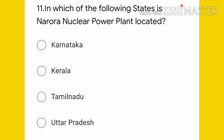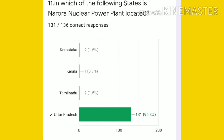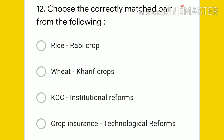Eleventh question: in which of the following states is the Narora nuclear power plant located — Karnataka, Kerala, Tamil Nadu, or Uttar Pradesh? The answer is Uttar Pradesh. Narora nuclear power plant is located in Uttar Pradesh, and 131 students gave the right answer — 96.3 percent.